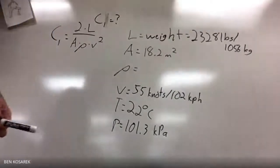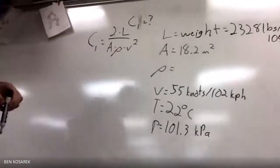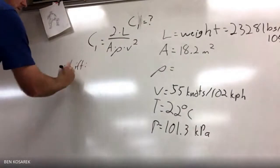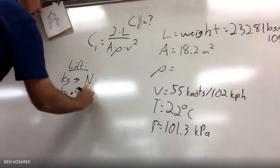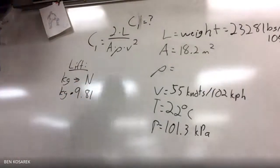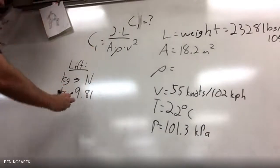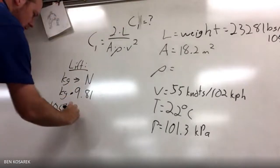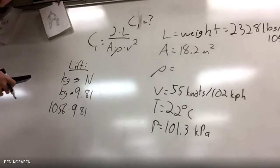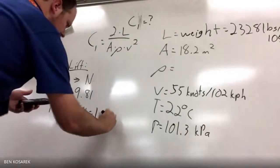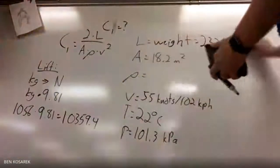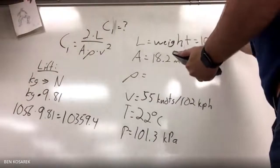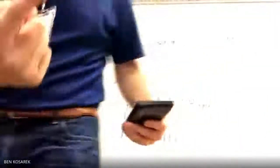To convert from kilograms into Newtons, take your kilograms and multiply by 9.81. So we take 1,056 times 9.81, and we get 10,359.4 Newtons. There we go, one down, two more to go.